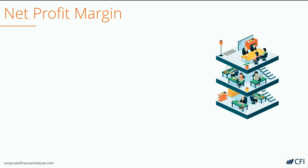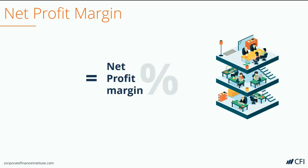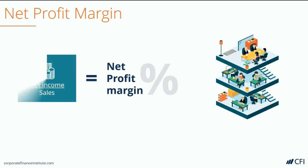The last of the three profitability ratios relates to the last item on the income statement — the net income or net earnings. By taking the net income and dividing it by sales revenue, we're able to derive the net profit margin. This ratio tells us how much income or how much net earnings are generated for every one dollar of revenue. As with all the other ratios, the higher this percentage is, the more profitable the business is.